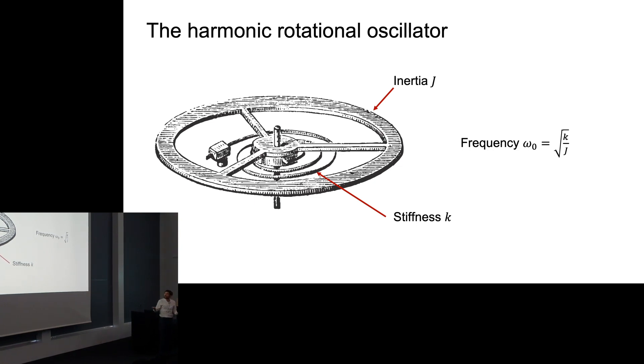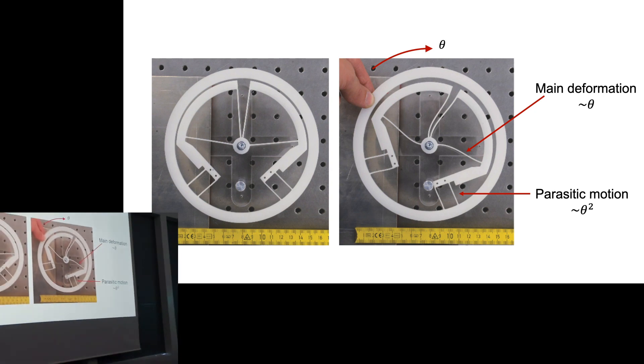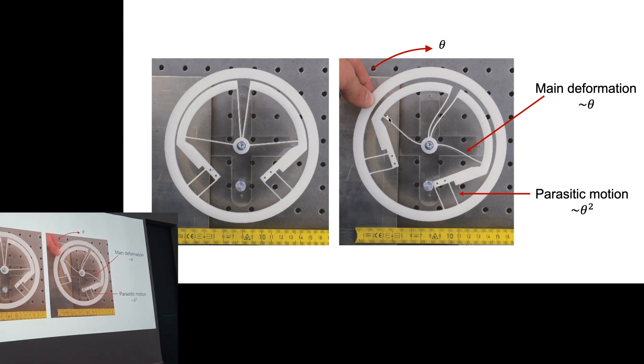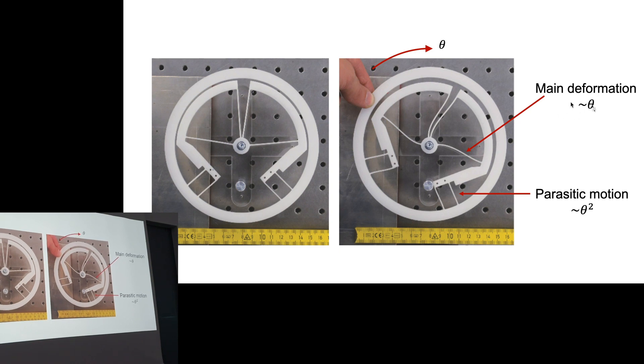So I found a way to overcome this. You can see it on the mock-up of my prototype. When it rotates, these blades make a deformation that is proportional to the rotation, but these other blades here make a much smaller deformation.